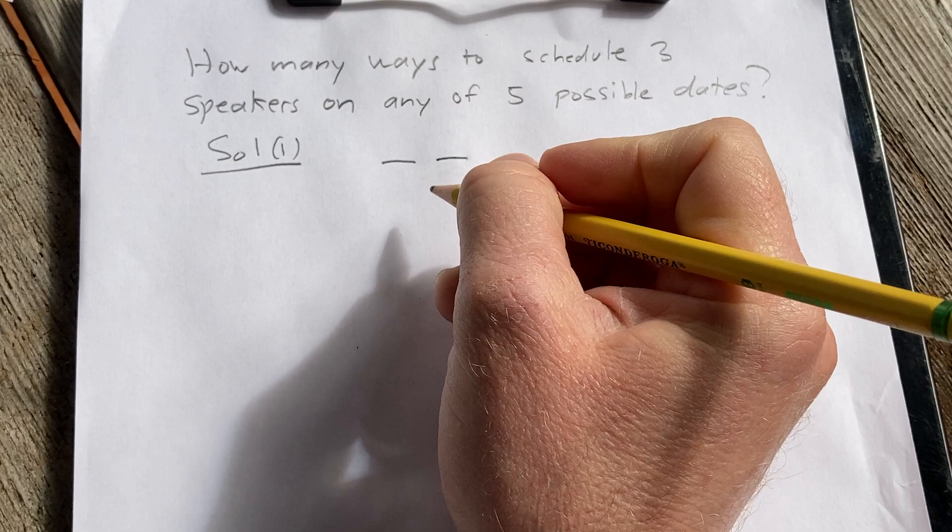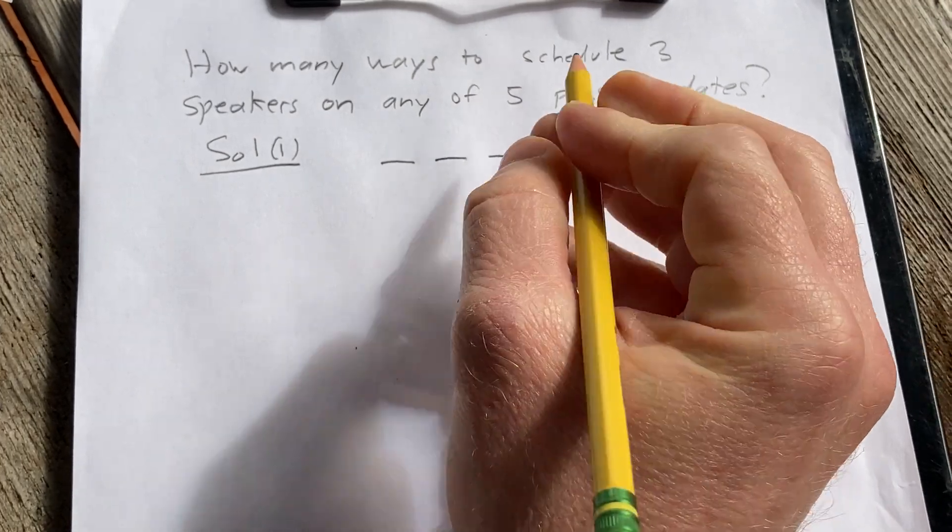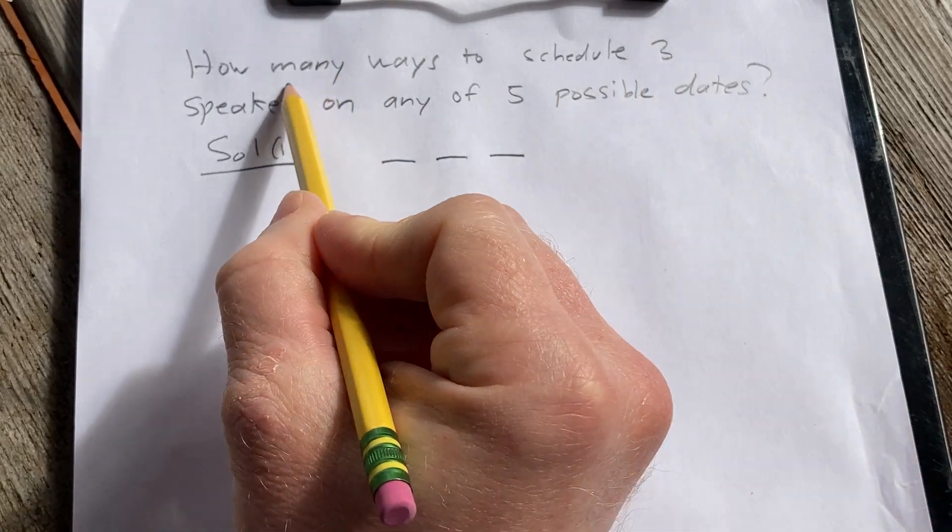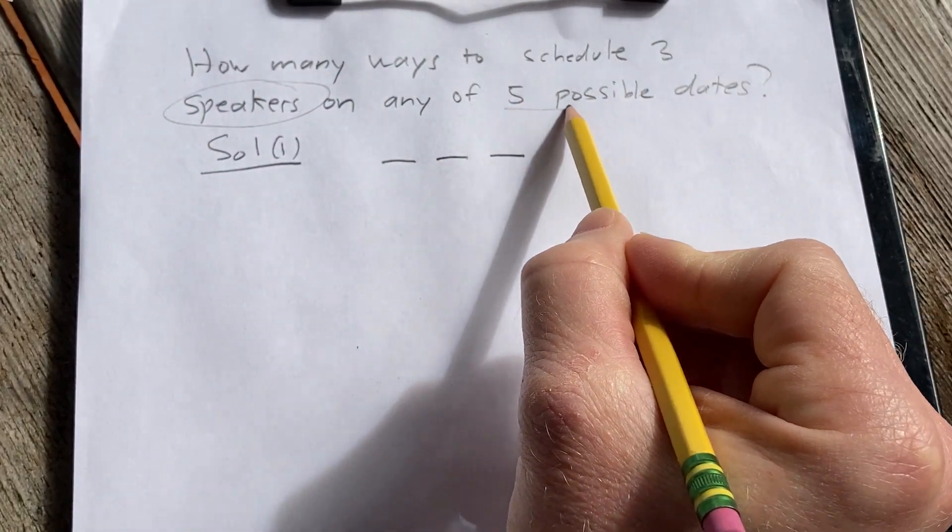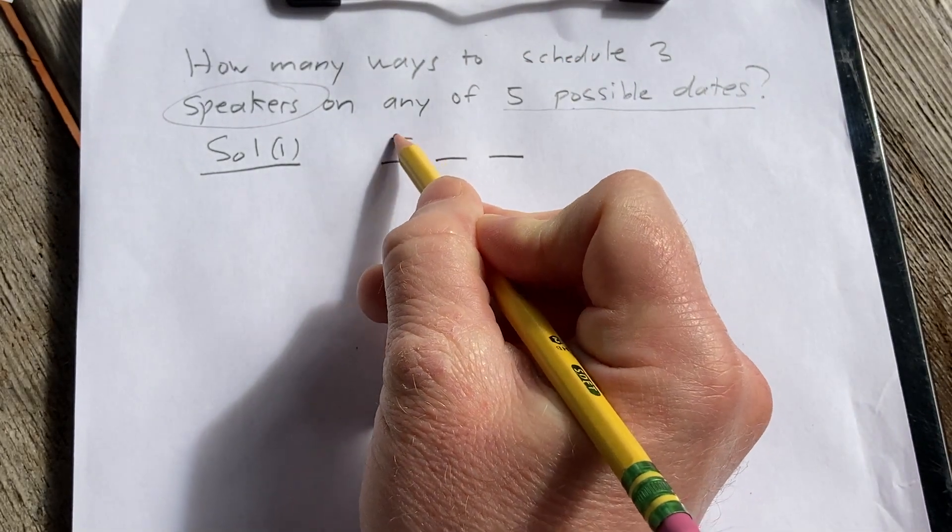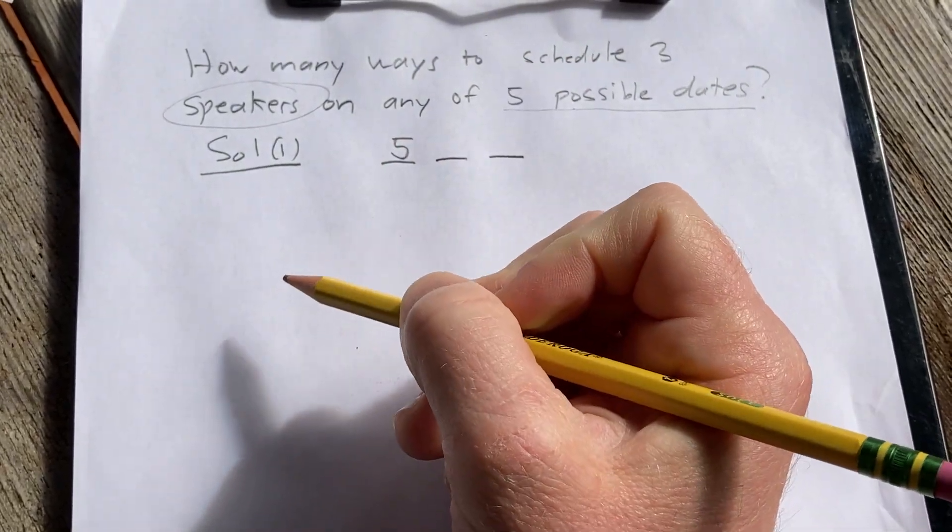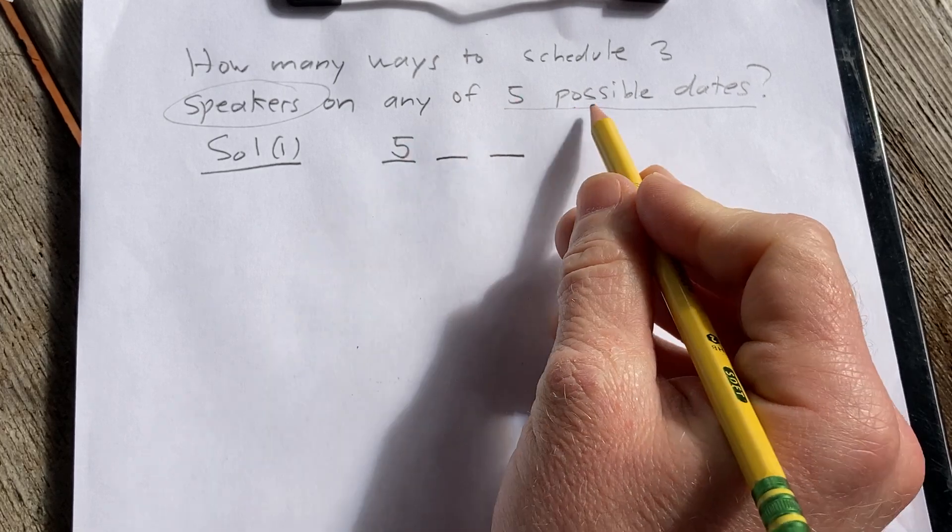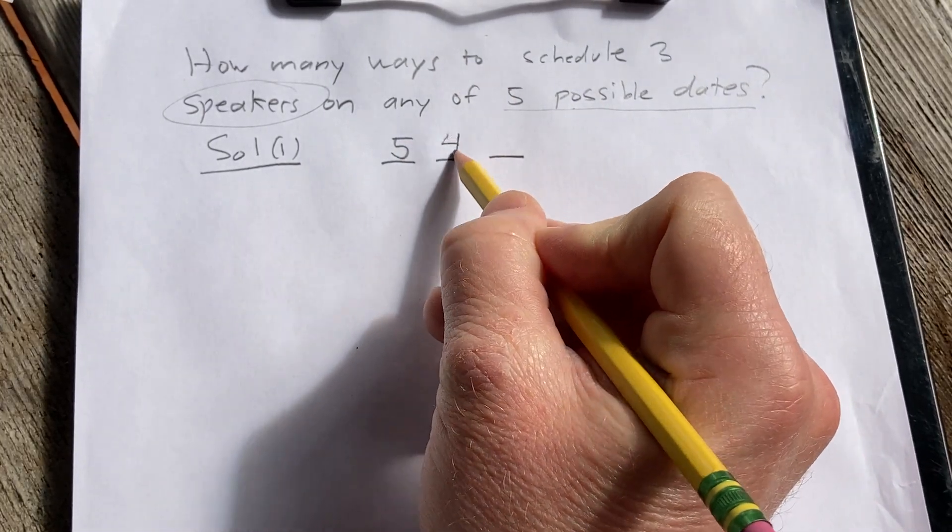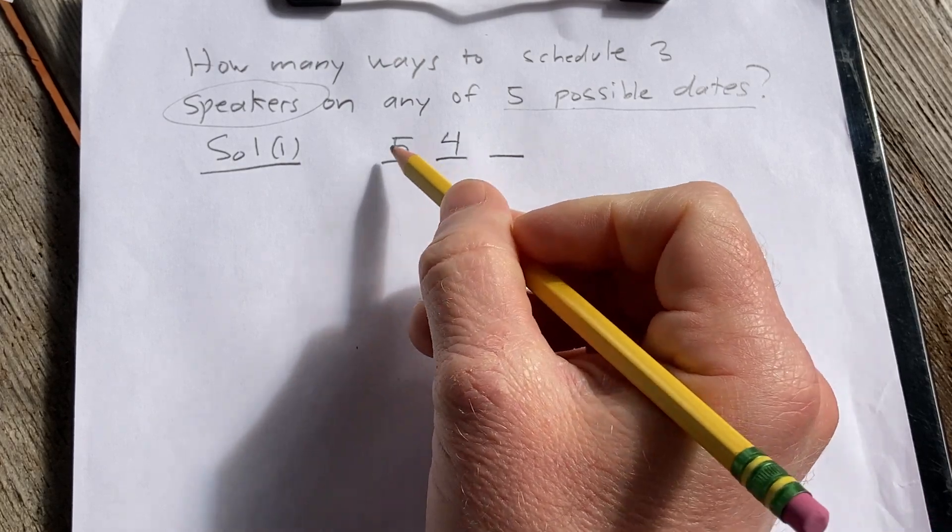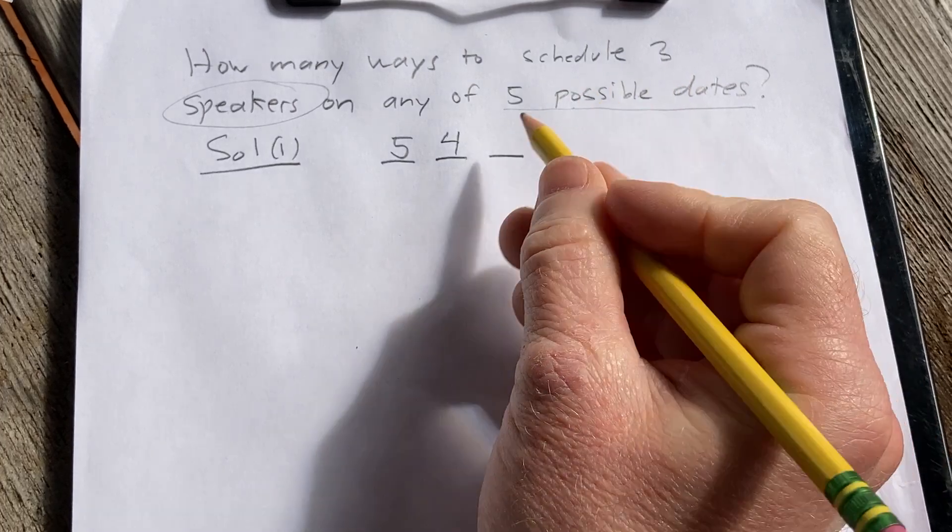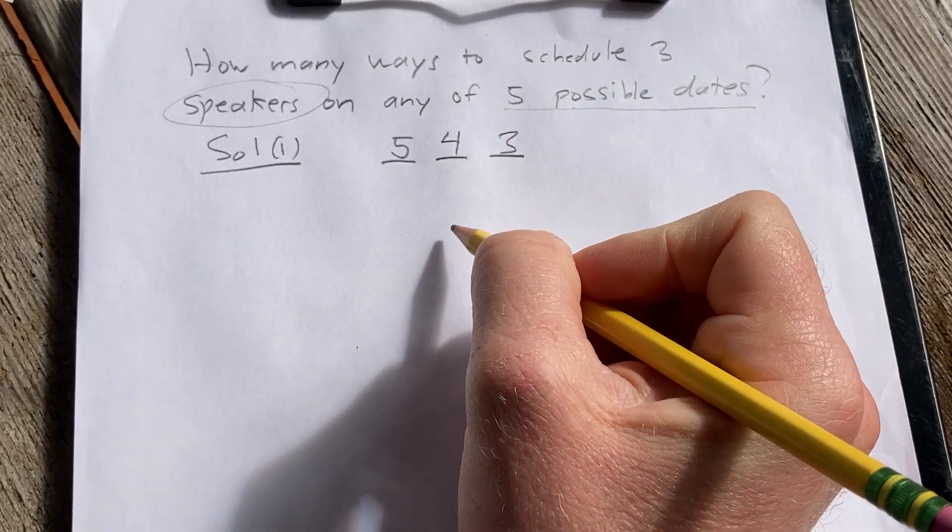So here's the first speaker, here's the second speaker, here is the third speaker. So in order to assign the speaker to one of the five possible dates, well we have five choices. So there's five ways to assign the first speaker. And then once we've chosen a date, there's only four dates left, so four ways to assign the second speaker. And there's three possible dates left, so there are three ways to assign the third speaker.